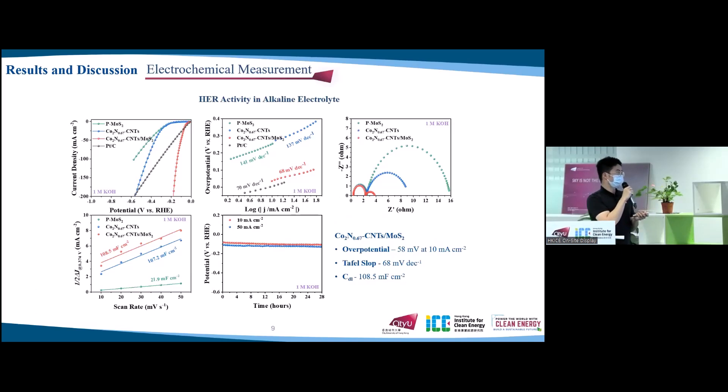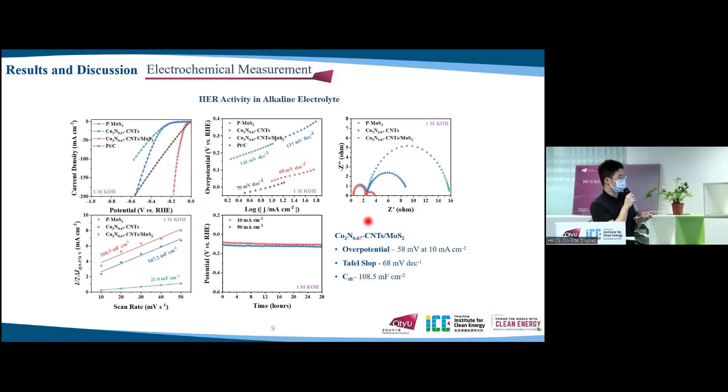The electrocatalytic performance of as-prepared materials were investigated in 1 M potassium hydroxide. The LSV curves show that the cobalt nitride-CNT at MoS2 only requires the overpotential of 58 mV to reach the current density of 10 mA per square centimeter, which is much lower than other as-prepared materials, and even better than the commercial platinum carbon under higher current densities. The Tafel slope, mass charge transfer resistance, and the double-layer capacitance of cobalt nitride-CNT at MoS2 are also superior to other as-prepared materials. The electrochemical stability of cobalt nitride-CNT at MoS2 was investigated by using chronopotentiometric test and showed negligible amplification in potential during almost 28 hours under the current density of 10 and 50 mA per square centimeter.